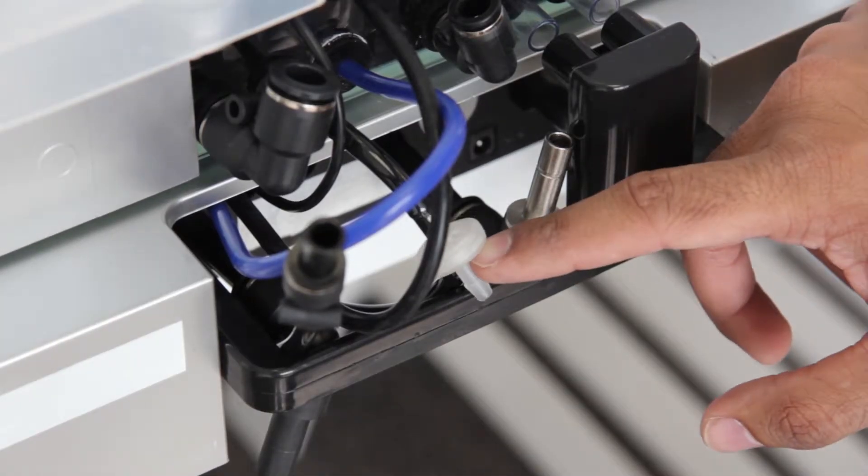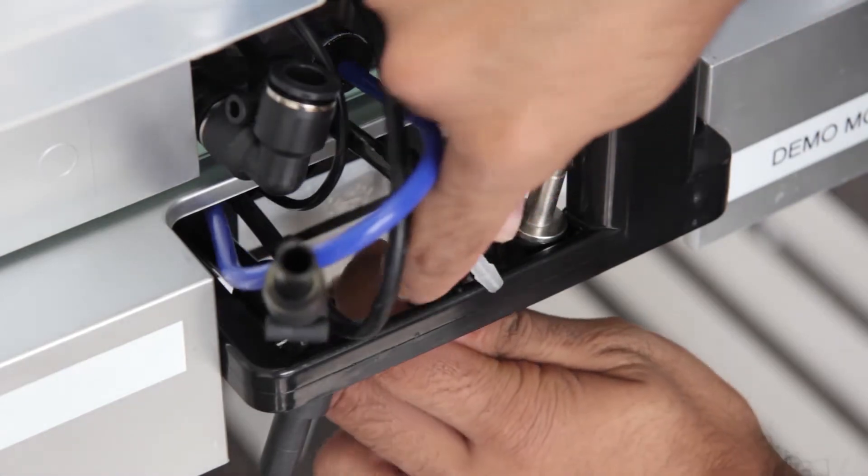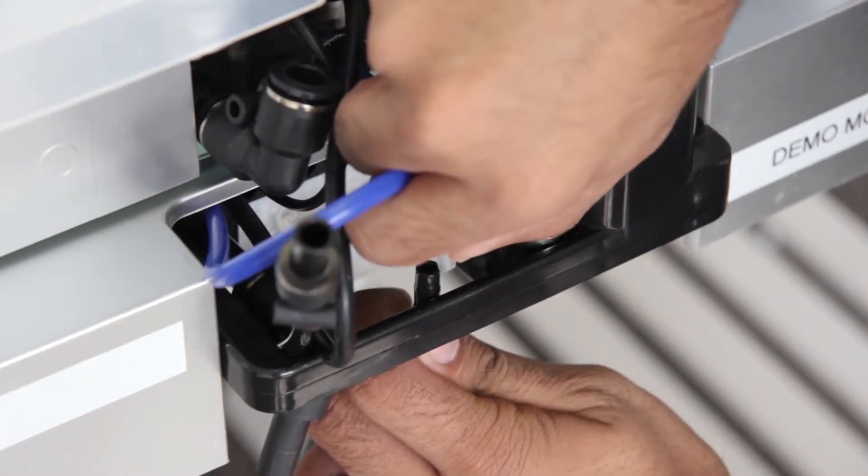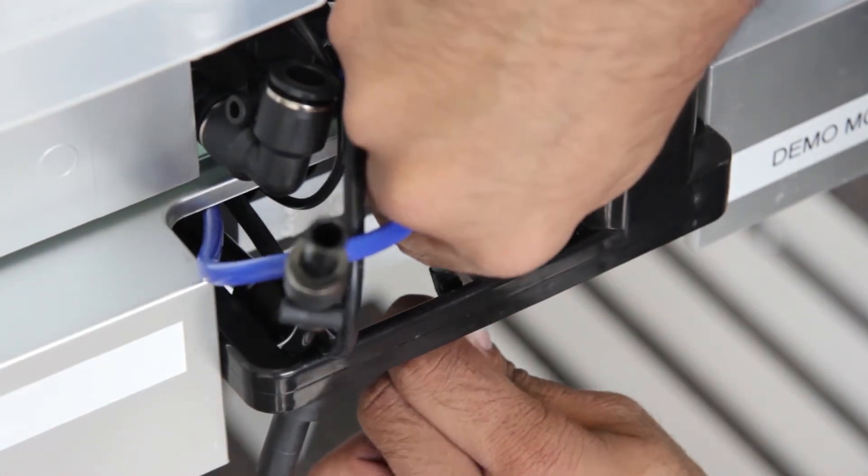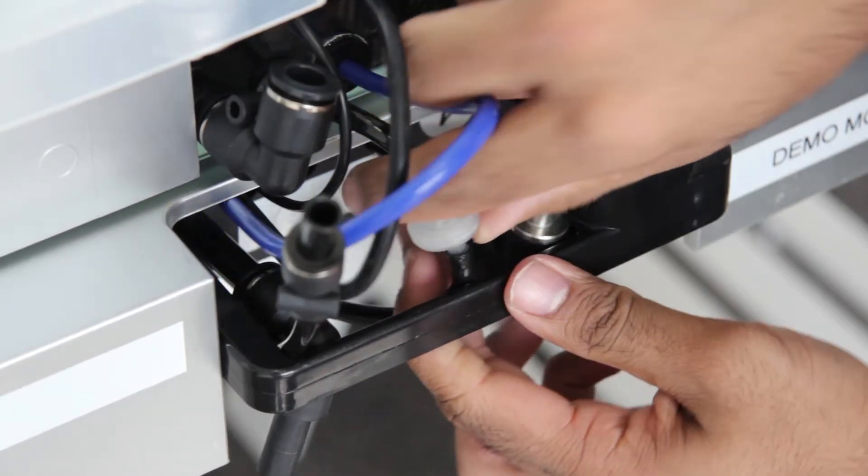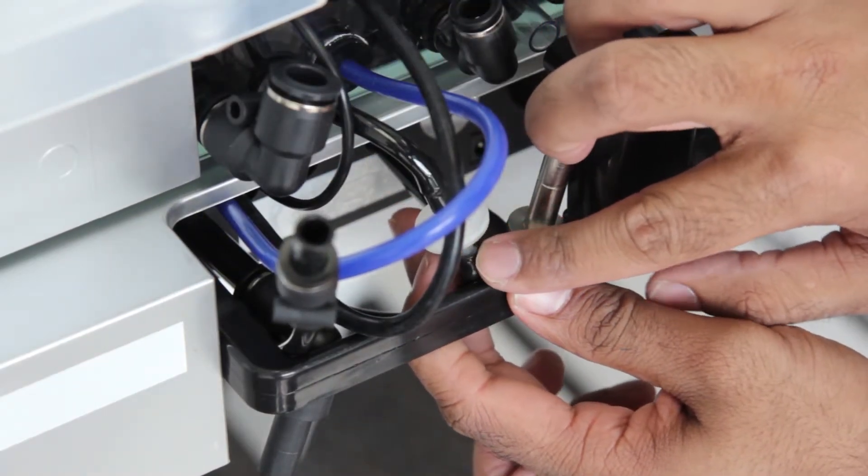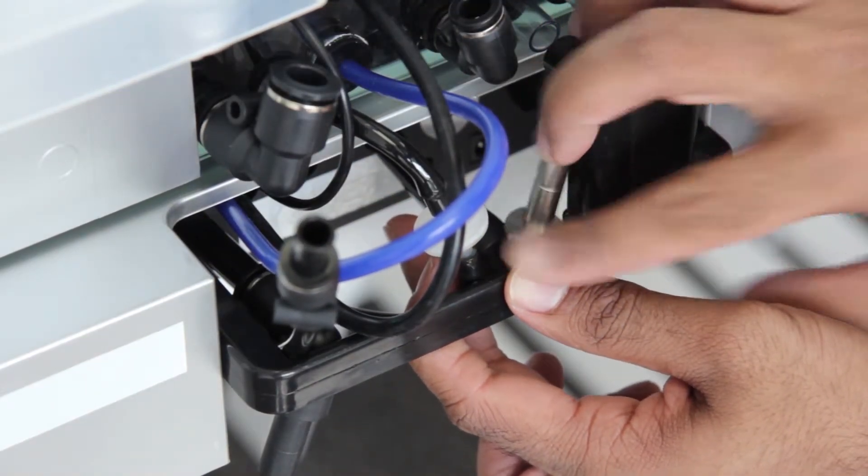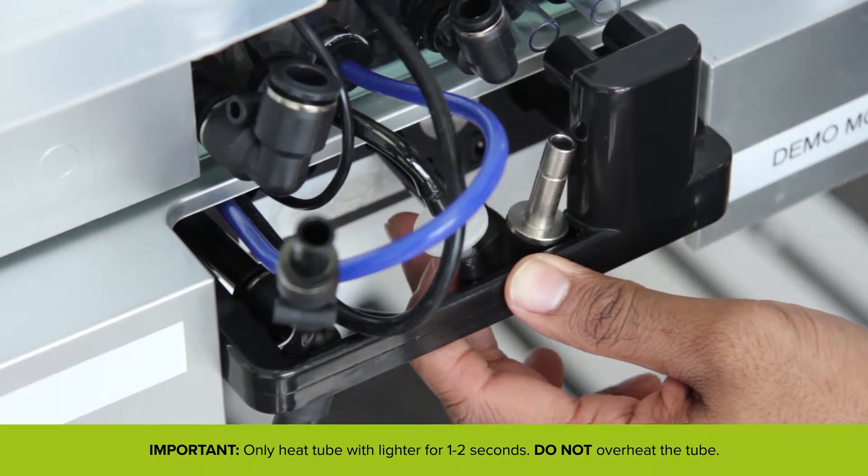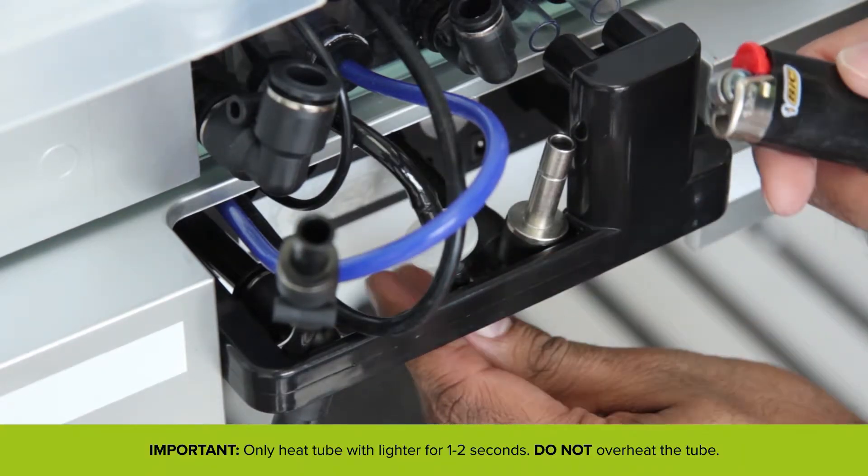Now we must reconnect this one-way air valve to its respective tube right here. The tube must go in all the way to the top of the one-way air valve. If you are having trouble putting it in, you can use a little bit of heat from a lighter to get it in all the way.